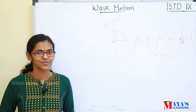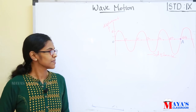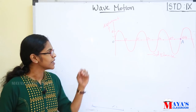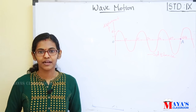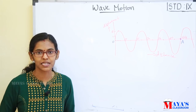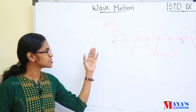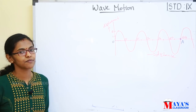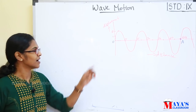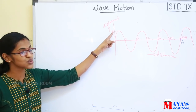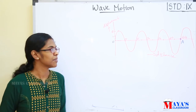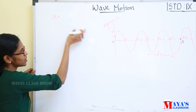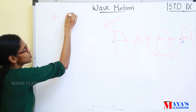Look at this graphical representation. What is the amplitude of the wave? Amplitude is the maximum displacement from the mean position. The amplitude of this graphical representation is 2 meters. If we represent the amplitude as A, the amplitude of this representation is 2 meters.